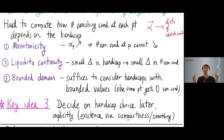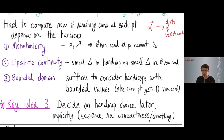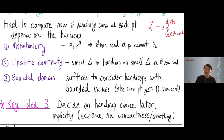The third key idea: we decide on the handicap choices implicitly. We do not specify the handicaps in advance; instead, we show via a smoothing and compactness argument that there exists a good choice of handicaps.